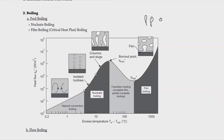When nucleate boiling reaches its highest point, the heat flux suddenly drops into transition boiling — an unstable film stage where there is complete mixing between transition and film behavior. After this transition we reach the Leidenfrost point, which signals the start of film boiling.